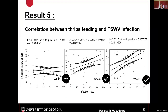We were curious: is thrips injury related to TSWV infection? The short answer is yes, but it depends on time. We made the correlation between thrips feeding and TSWV infection. At seven-day post-infestation, there is no correlation between infection rate and feeding damage. But after three weeks of feeding, they are related, and after three weeks the correlation is positive and stronger. So thrips play an important role in TSWV infection.